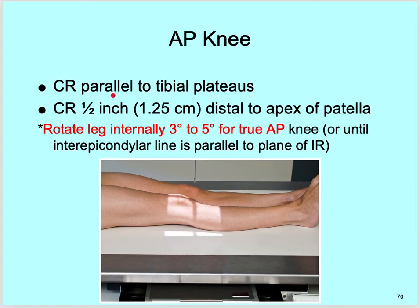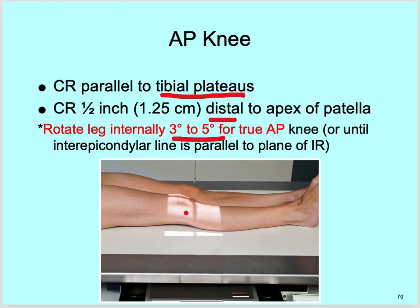Your AP knee central ray is parallel to the tibial plateau — you need to know it is parallel to that tibial plateau. Your central ray is a half inch distal to the apex of the patella. You're not aiming at the patella; you're distal to that apex about a half inch. Rotate the leg internally 3 to 5 degrees for a true AP, feeling those condyles, until the inter-epicondylar line is parallel to the plane of the IR.